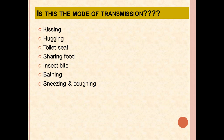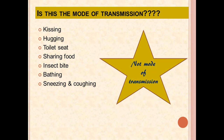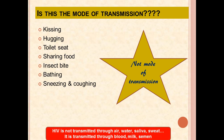Is kissing, hugging, sharing a toilet seat, sharing food, insect bites, bathing, sneezing, or coughing a mode of transmission? The answer is no. HIV is not transmitted through air, water, saliva, or sweat. It is transmitted through blood, milk, and semen.